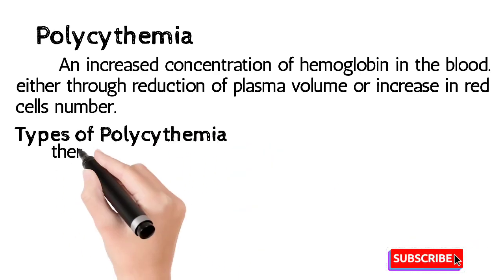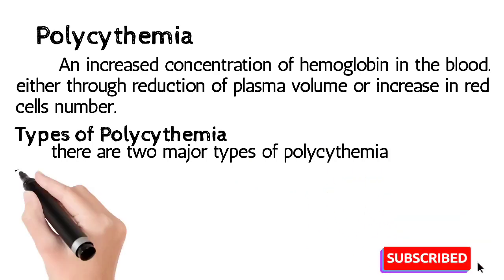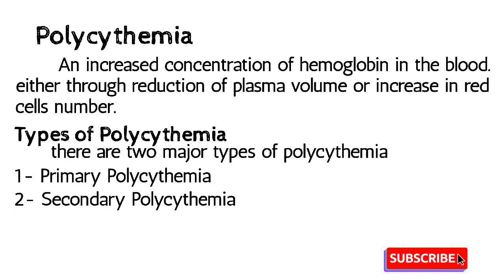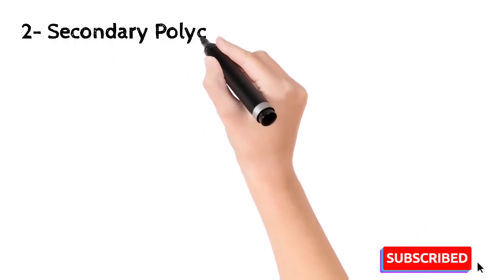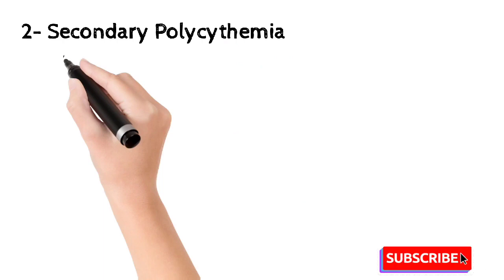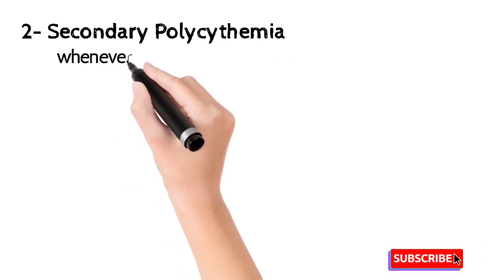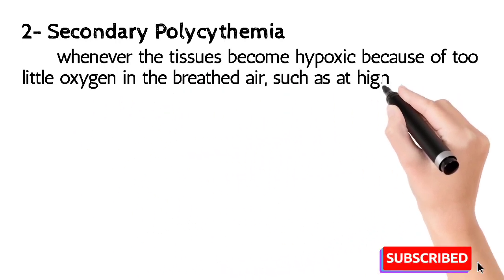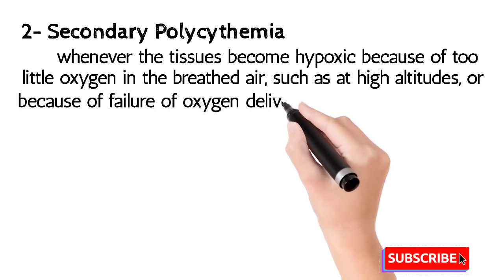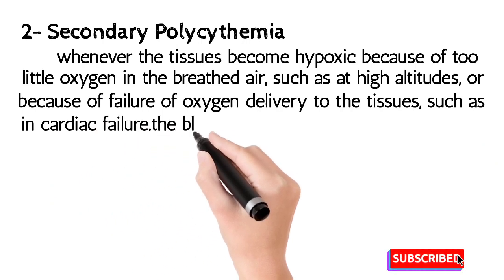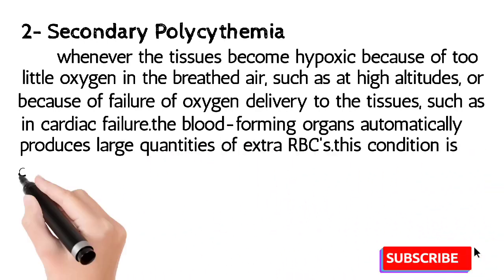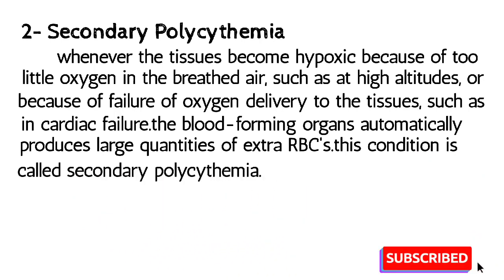We are discussing secondary polycythemia first. Secondary polycythemia is a condition during which the tissues become hypoxic due to very low oxygen concentration in the breathing air, such as at high altitudes, or because of failure of oxygen delivery to the tissues, such as in cardiac failure. The blood-forming organs automatically start producing large quantities of extra RBCs — this condition is called secondary polycythemia.